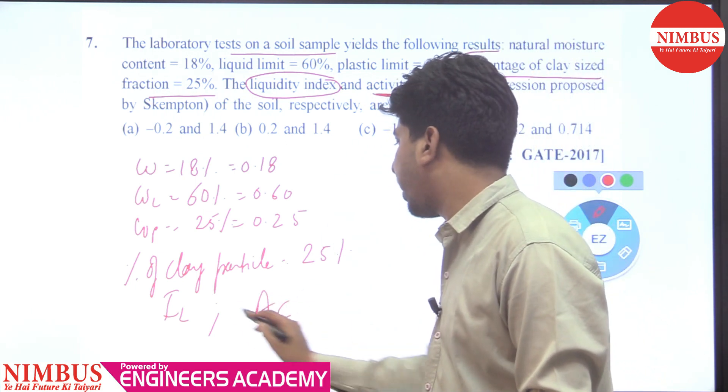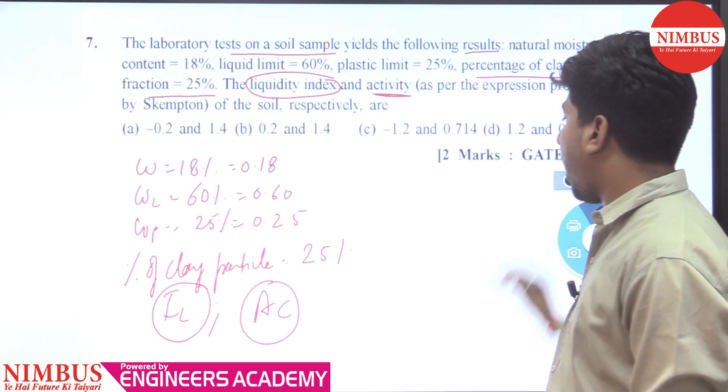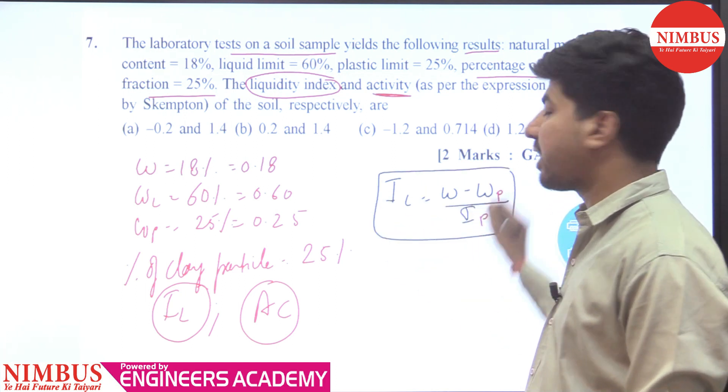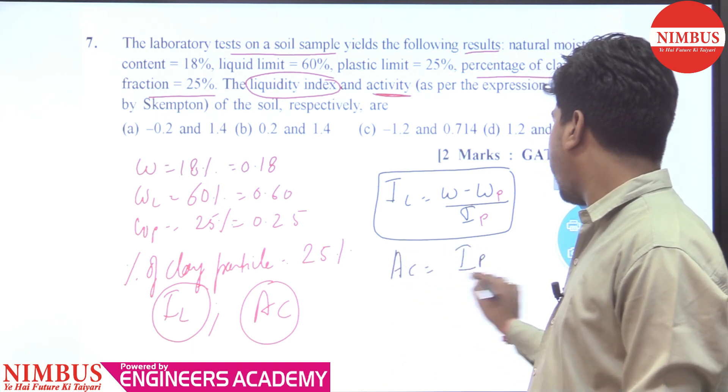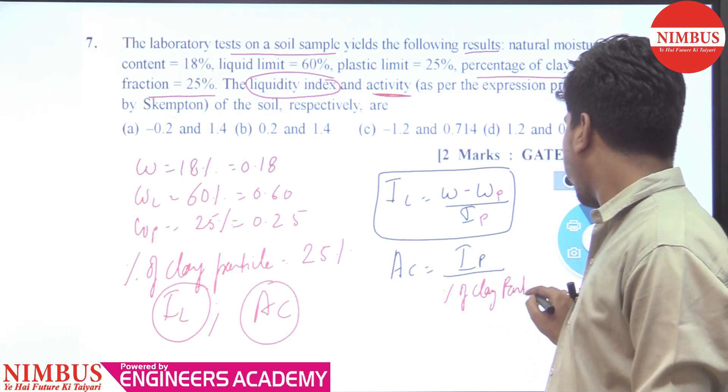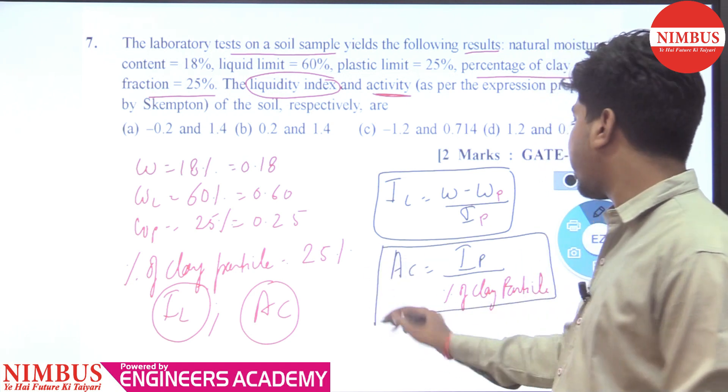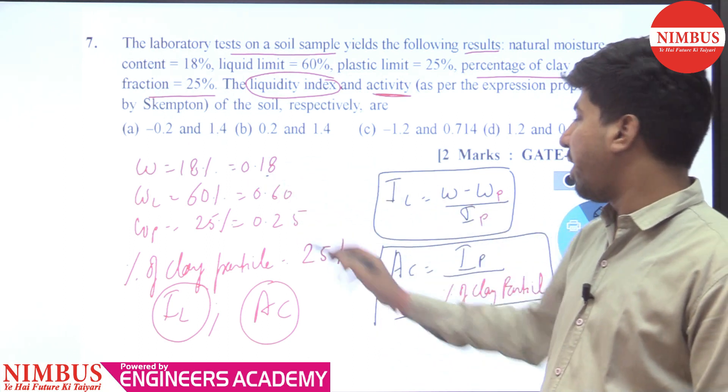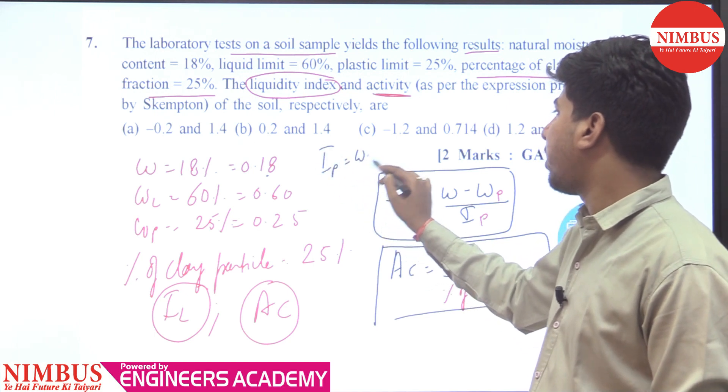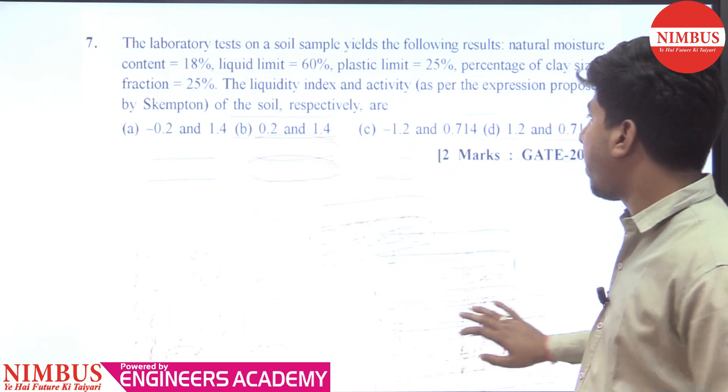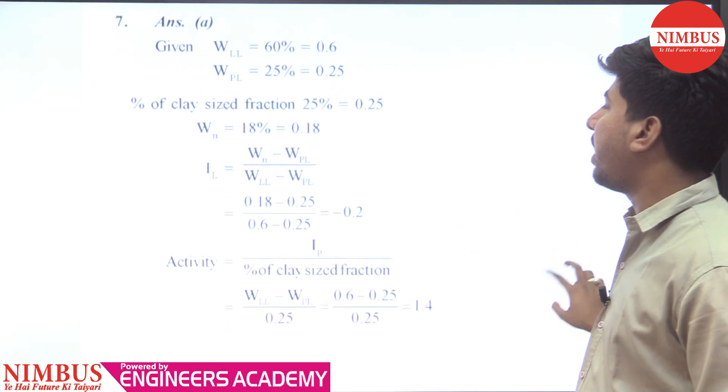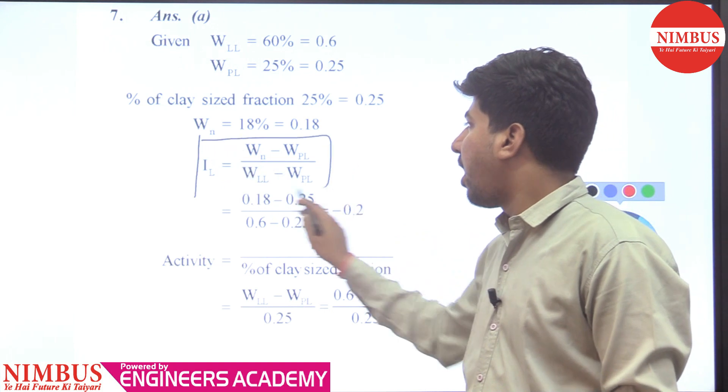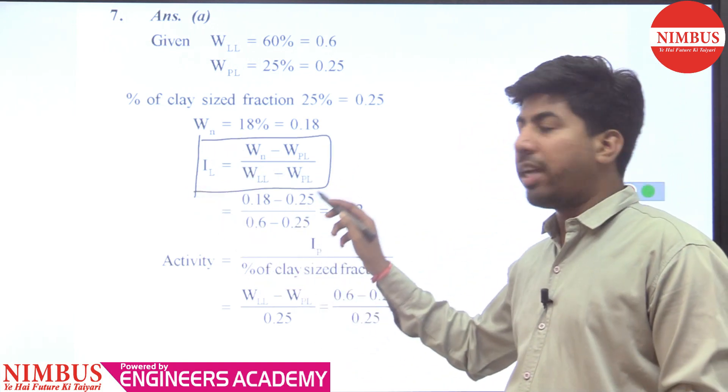So let's use the formulas. Liquidity index IL formula: water content 18, 18 minus 25 in the numerator. IP, plastic index, is liquid limit minus plastic limit. Liquidity index formula is W minus WP upon IP.